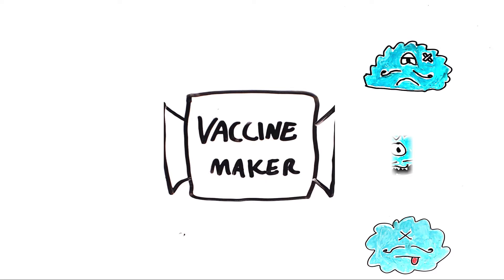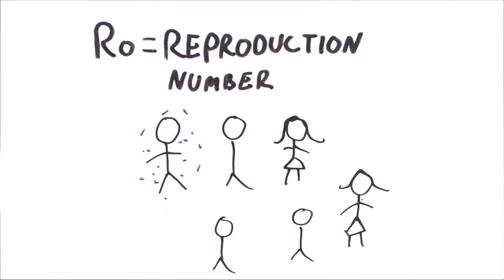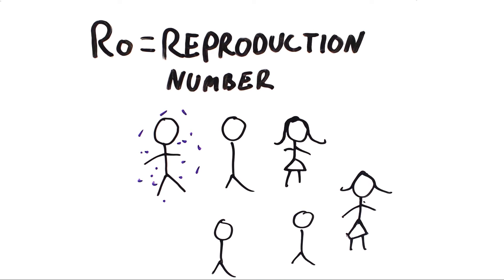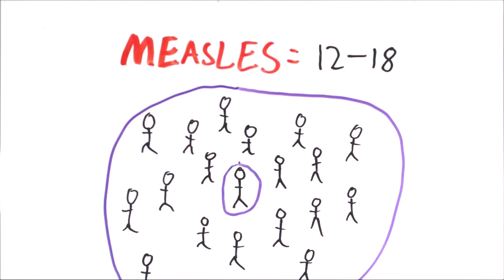For infectious diseases, there's a number referred to as R0. This is the amount of people that an infected person will infect. For diseases like Ebola, it's about 2, but for measles, it's about 12 to 18, meaning a person with measles can infect up to 18 other people.